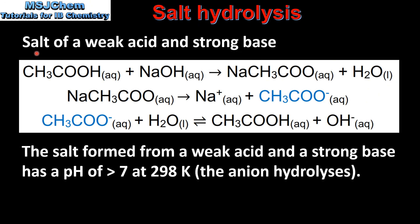Next we look at the salt of a weak acid and a strong base. Sodium ethanoate is produced in the reaction of ethanoic acid, a weak acid, and sodium hydroxide, a strong base. The sodium ethanoate dissociates into sodium ions and ethanoate ions. The ethanoate ion hydrolyzes the water molecule to form the hydroxide ion. The salt formed from a weak acid and a strong base has a pH of greater than 7 at 298 K, because the anion hydrolyzes.